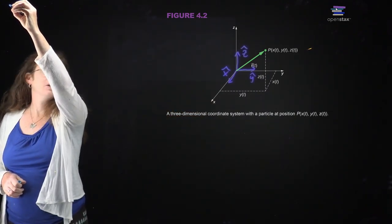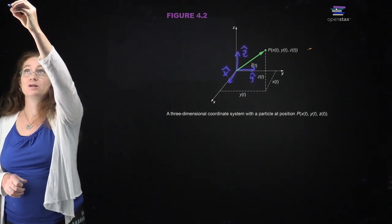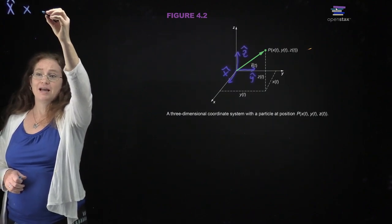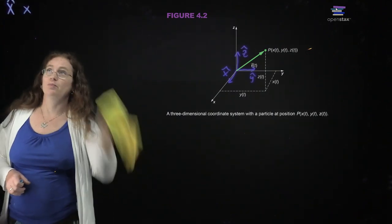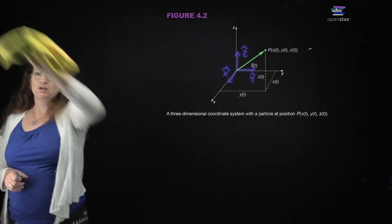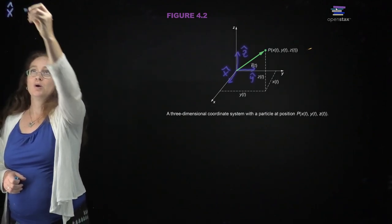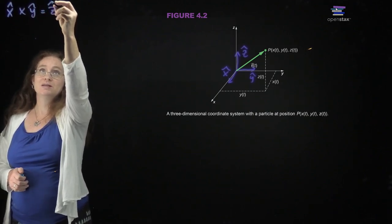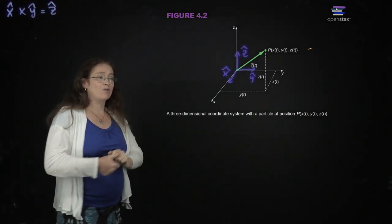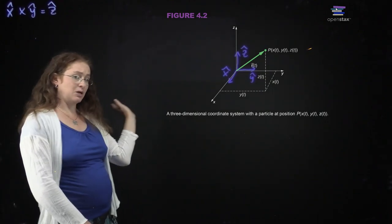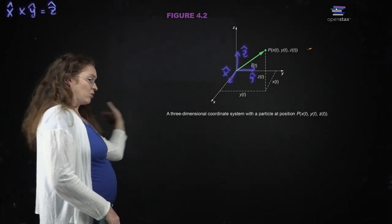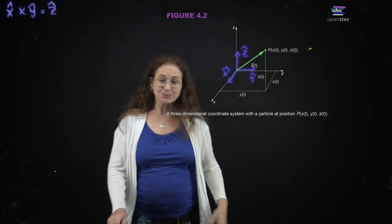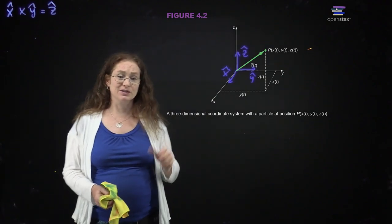We're going to define our coordinate system as right-handed. The cross product of X-hat with Y-hat is equal to Z-hat in a right-handed coordinate system. Line your palm up with the X axis, rotate it towards the Y axis, and it gives you the Z axis — that's how we get a right-handed coordinate system.